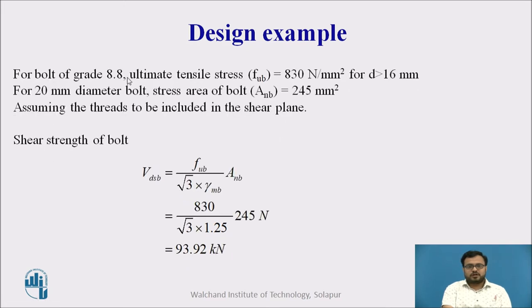Now for grade 8.8, grade of bolt 8.8, ultimate strength equal to 830 N per mm square for diameter greater than or equal to 16 mm. Now the net area of the bolt for 20 mm diameter, it is equal to 0.78 pi by 4 D square. So D is equal to 20 mm. 0.78 pi by 4 D square, which is equal to 245 mm square. We will take an assumption here that is the thread will cut the shear plane.